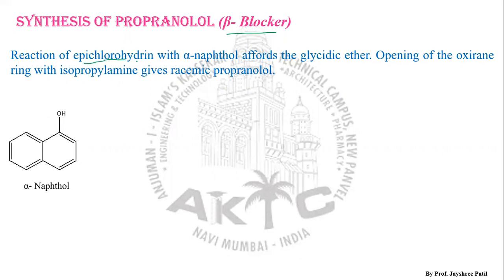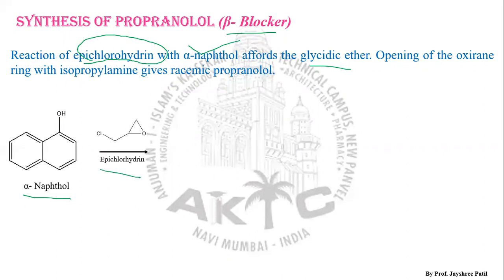It's a reaction of epichlorohydrin with the starting material, alpha naphthol, which will produce the glycidic ether. Here is the starting material, alpha naphthol. When alpha naphthol is treated with epichlorohydrin — this is the structure of epichlorohydrin — you can see the ring looks like an epoxide, due to the presence of chlorine. The name of this reagent is epichlorohydrin.